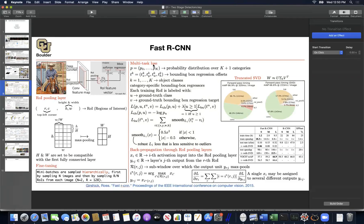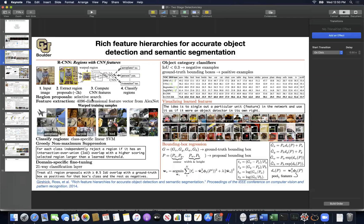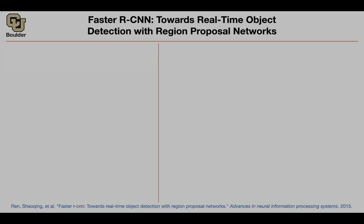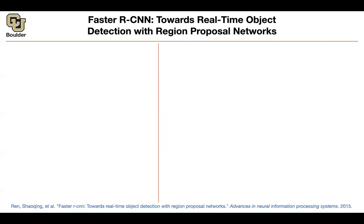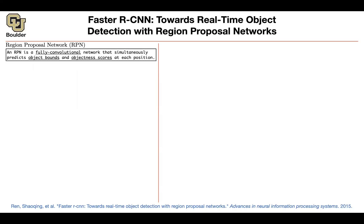But something was still a bottleneck: we needed to share more computations, and that bottleneck was the region proposal algorithm — selective search. This next paper came along and said we can actually have a neural network proposing what regions to use. That's going to be a Region Proposal Network, or RPN — a fully convolutional neural network.